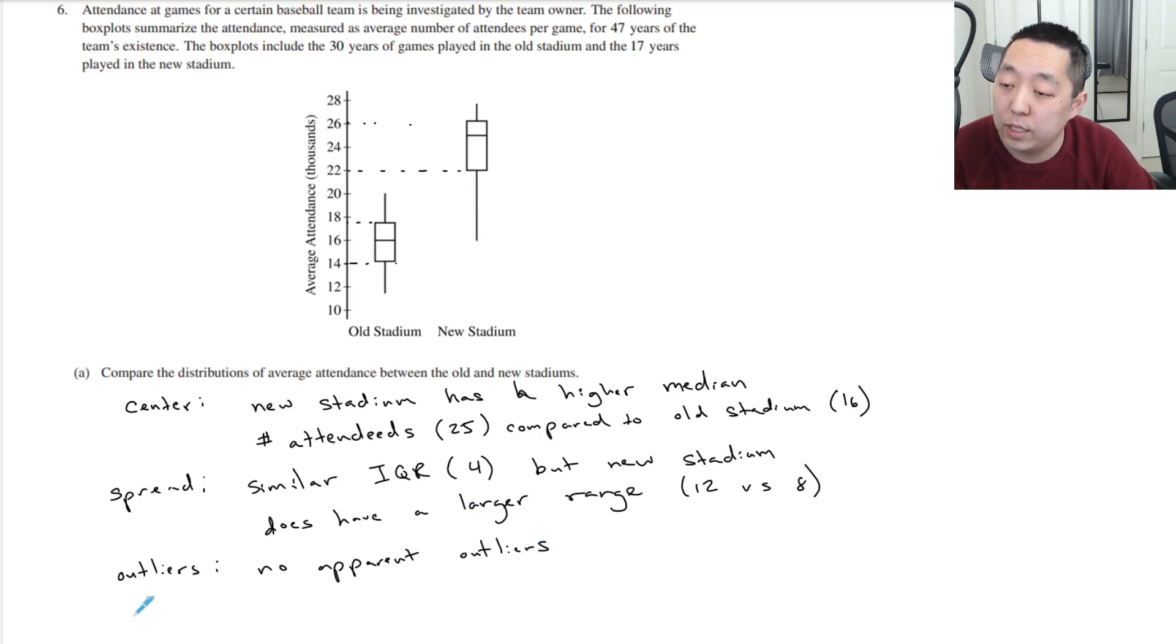And then I would say in terms of shape, the old stadium appears to have no skew, has no skew, and the new stadium is skewed, skewed left.